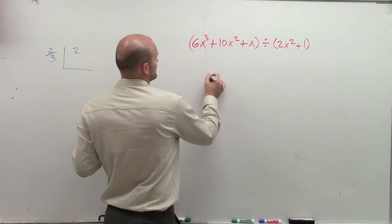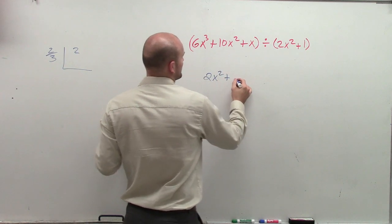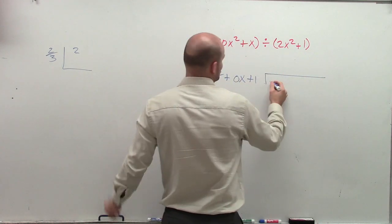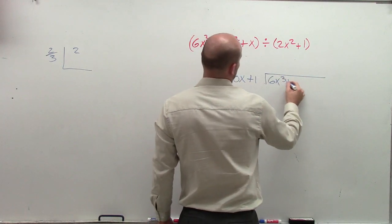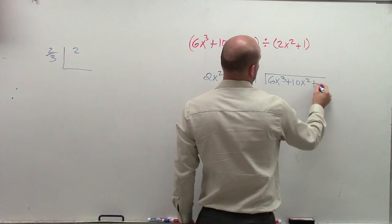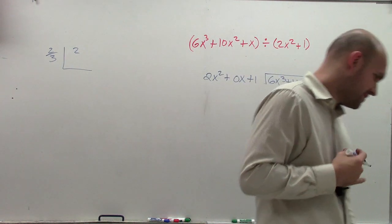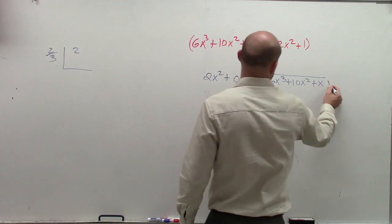So I have 2x squared plus 0x plus 1 divides into 6x cubed plus 10x squared plus x. And let me make sure, that's everything I have, plus 8. I thought there was an 8 there.